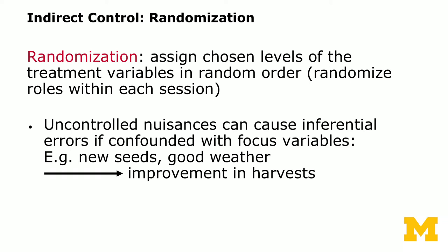The experimenter can also have indirect control through randomization. Randomization enables the experimenter to assign participants or subjects into different treatments, and an experimenter can also randomize roles within an experimental session if that applies. Uncontrolled nuisances can cause inferential errors if confounded with focus variables. For example, in an agricultural experiment primarily interested in the effects of new seeds, randomizing plots of land into getting new seeds versus status quo seeds allows you to look at the effects of new seeds given that weather conditions affect all treatments equally.